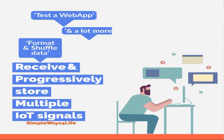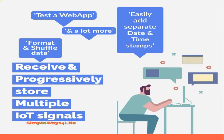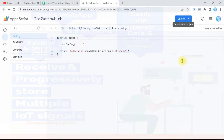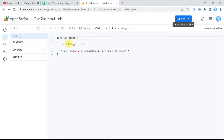Today we are going to delve deep into the IoT service: how to receive more than one parameter, how to shuffle the parameters, what happens if something is missing, and many other scenarios — how to record data into our sheet progressively. Many tricks, thoughts, and insights you are going to see in this video.